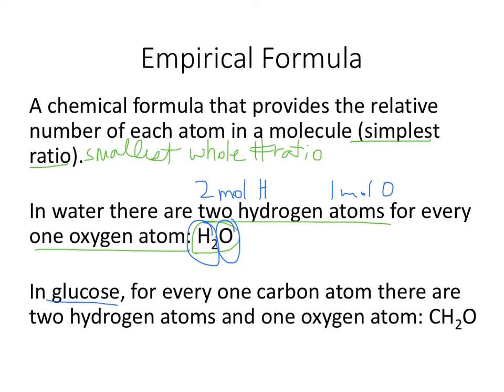In glucose, which is a type of sugar, for every one carbon atom, there are two hydrogen atoms and one oxygen atom. So the empirical formula for glucose is CH2O.